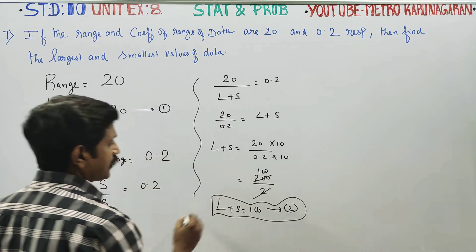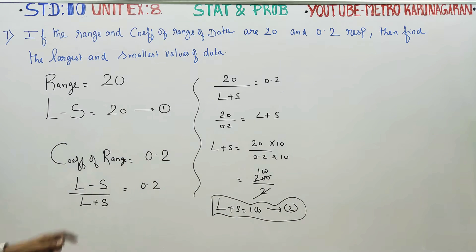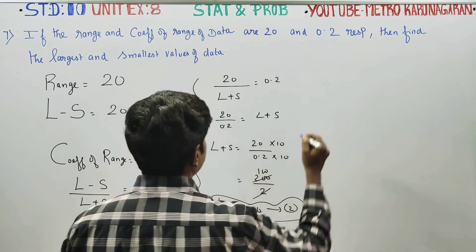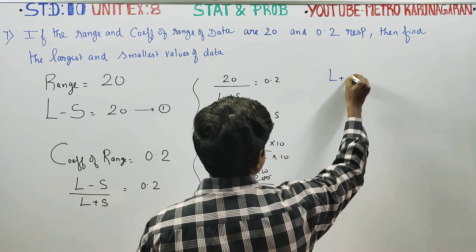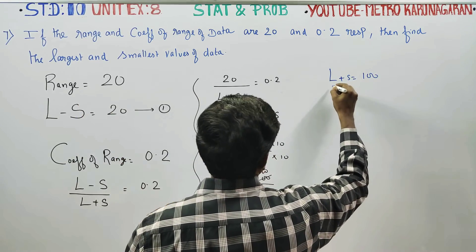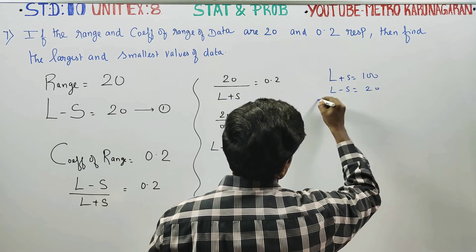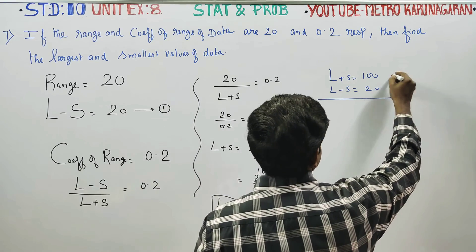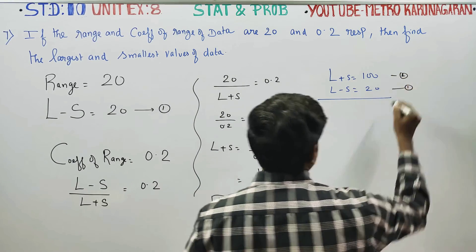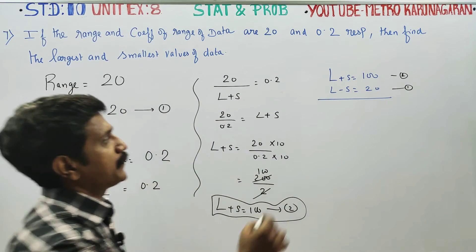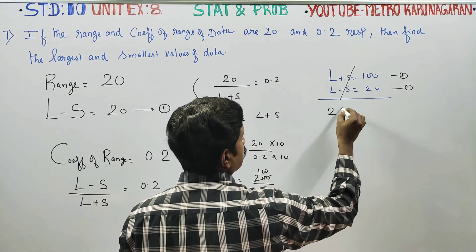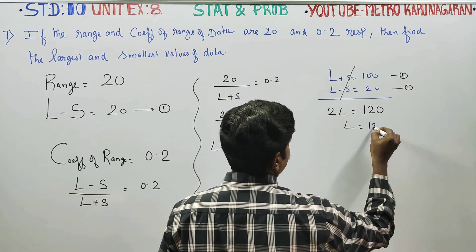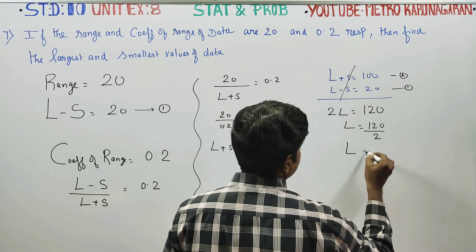Now we have equation number 1 and equation number 2 ready. Adding both equations: 2L is equal to 120, therefore L is equal to 120 divided by 2, so L is equal to 60.